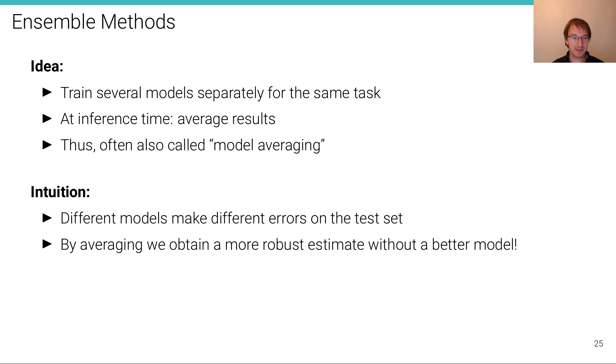The intuition behind is that different models make slightly different errors on the test set. And by averaging these predictions we obtain an overall more robust estimate without actually requiring to develop a better model. So we can use the same model as an ensemble by squeezing out this 2 or 3% of additional performance.